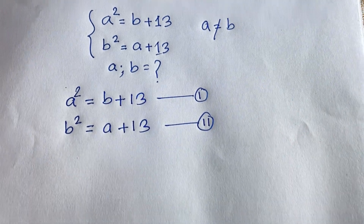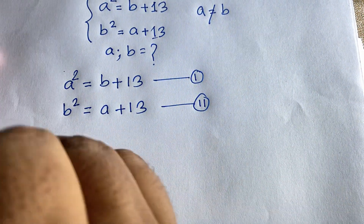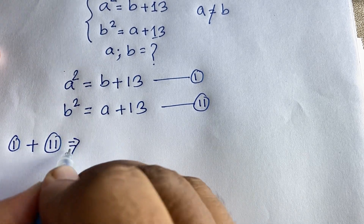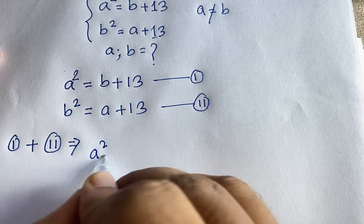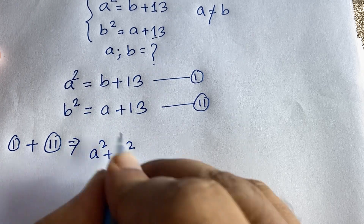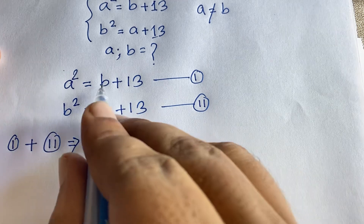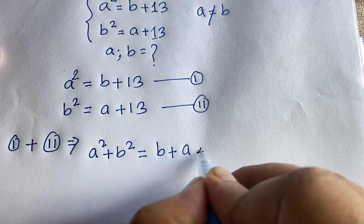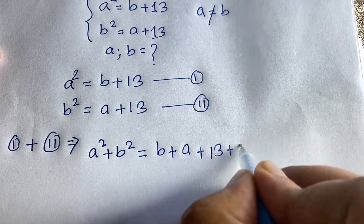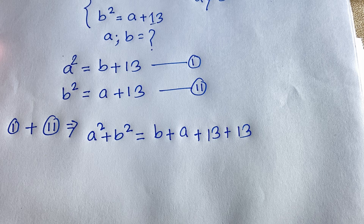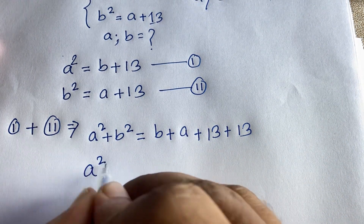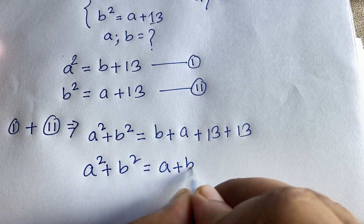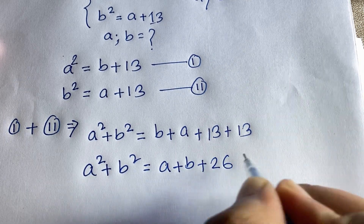Now I add the first equation and the second equation together. We get a squared plus b squared on the left side, and b plus a plus 13 plus 13 on the right side. So a squared plus b squared is equal to a plus b plus 26. This is our third equation.